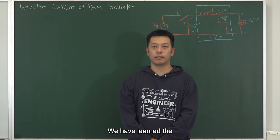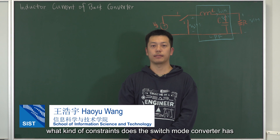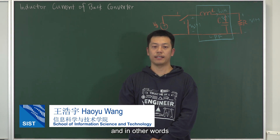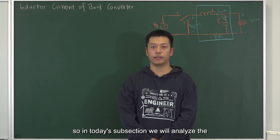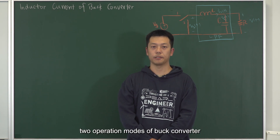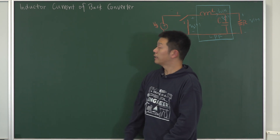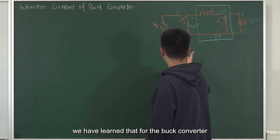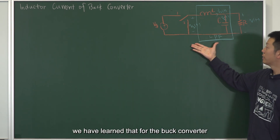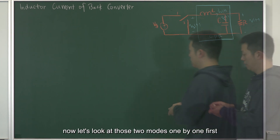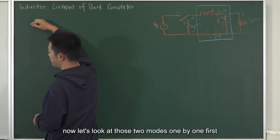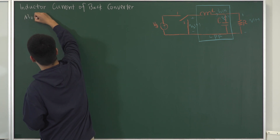We have learned the working principle of buck topology. You must ask: what kind of constraints does the switch mode converter have, and what mathematical equations should the switch converter satisfy? In today's subsection we will analyze the two operation modes of the buck converter, mainly talking about the inductor current. Based on the switch position, we can have two operation modes.